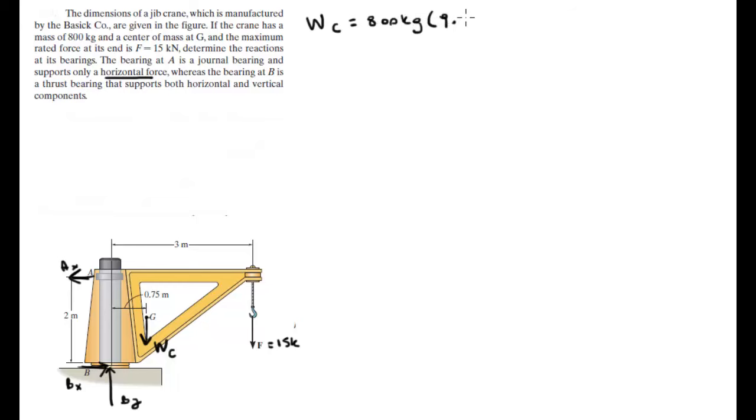So first of all let's calculate the weight of the crane. The weight of the crane is equal to the mass which is 800 kilograms times the acceleration of gravity which is 9.81 meters per second squared and that gives you that the weight of the crane is equal to 7.848 kilonewtons.